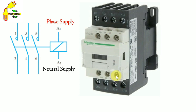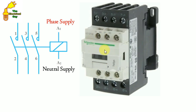When at A1 phase supply and at A2 neutral supply is provided, this contactor gets pickup. After pickup, the auxiliary contacts inside — NO and NC — get changed. It means the auxiliary NO contact will become NC after contactor pickup, and the NC contact becomes NO.